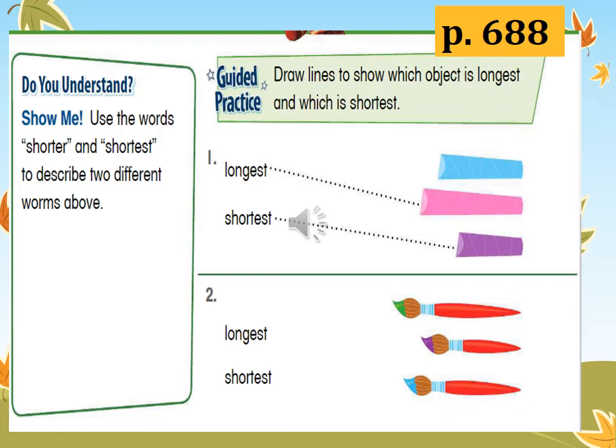As you can see, these three objects start at the same point, so we can see that the pink one is the longest. Now let's do number two. Which do you think is the longest and which is the shortest? Can you do it? We will see which is the longest and which is the shortest in the next slide.